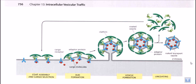Let us talk about vesicle formation. First, why does a cell need to form a vesicle? A cell needs to form vesicles inside it to make pouches in which proteins can be stored — not only proteins but different ingredients of the cell like lipids or other things. So normally in the vesicular trafficking system, to deliver a particular protein to its destination we need a vehicle in which the protein can be stored, and these vesicle pouches provide that storage area.